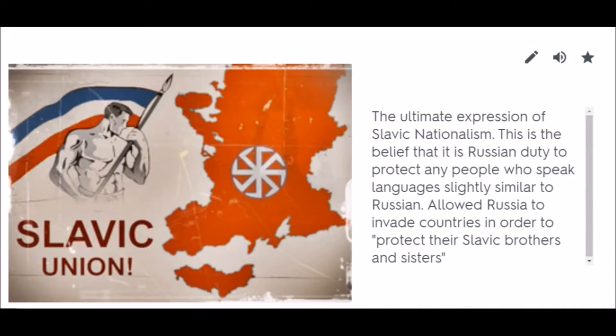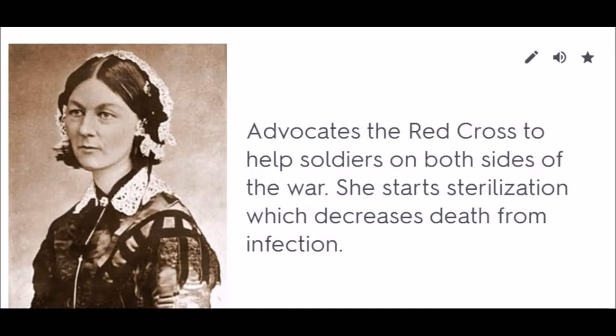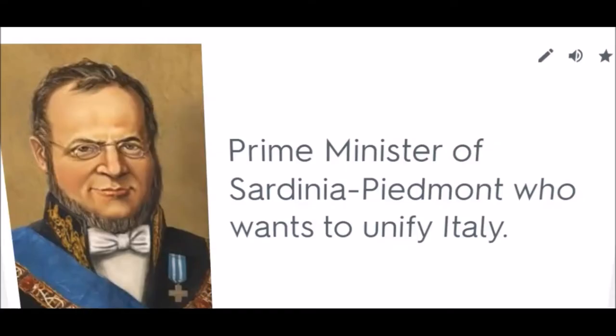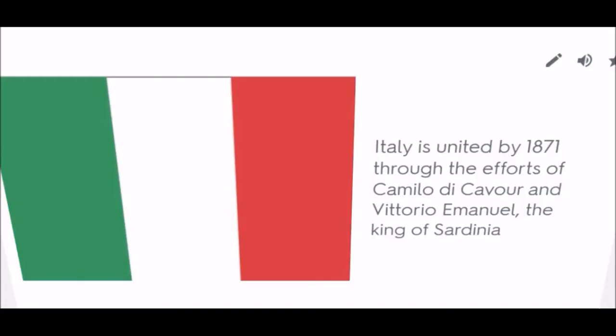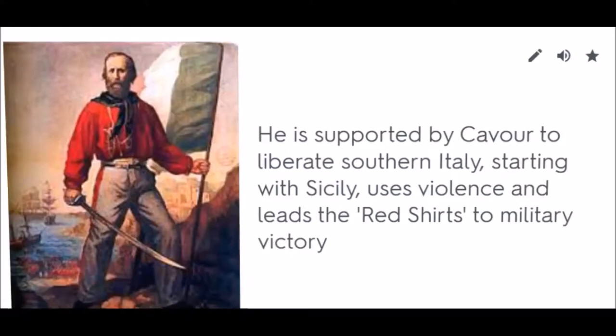Florence Nightingale: Advocates the Red Cross to help soldiers on both sides of the war. She starts sterilization, which decreases death from infection. Cavour: Prime Minister of Sardinia-Piedmont who wants to unify Italy. Unification of Italy: Italy is united by 1871 through the efforts of Camillo di Cavour and Vittorio Emanuele, the king of Sardinia. Garibaldi is supported by Cavour to liberate southern Italy, starting with Sicily, and leads the Red Shirts to military victory.